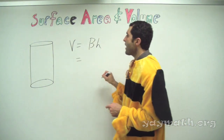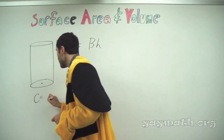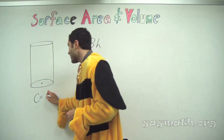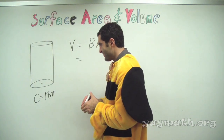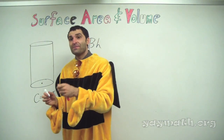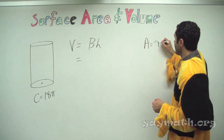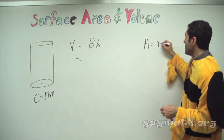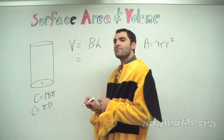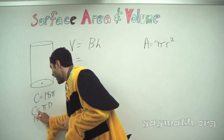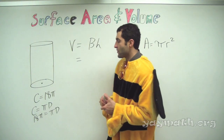Let's find the area of the base. Suppose the circumference is 18π. The circumference formula is C = πd. If circumference is 18π, then 18π = π times the diameter. So the diameter must be 18, and thus the radius is 9.